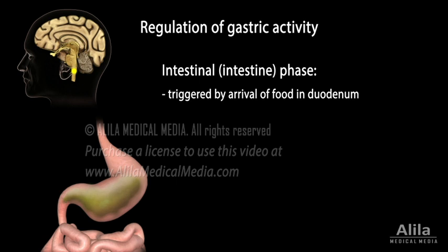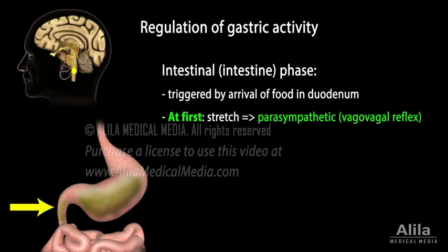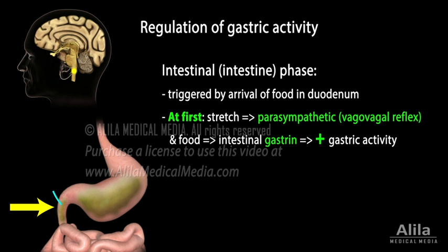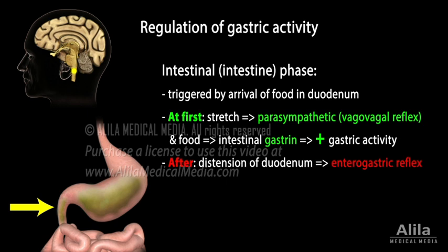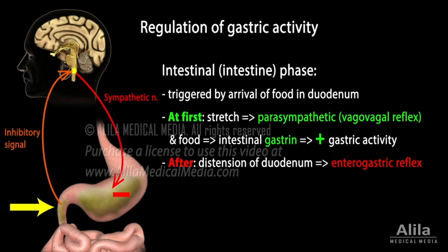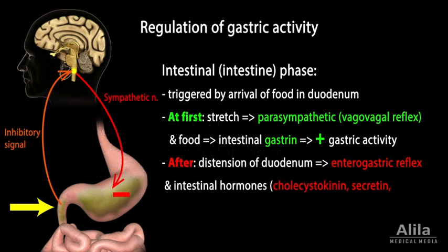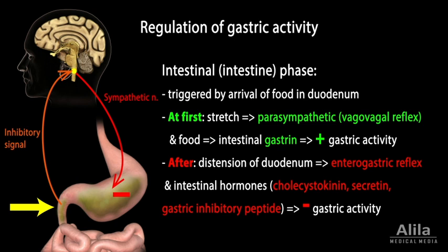The intestinal phase is triggered by the arrival of chyme in the duodenum. Initially, the stretching and presence of partially digested food in the duodenum further stimulate gastric activity via the vagal-vagal reflex and production of intestinal gastrin. Soon, however, distension of the duodenum inhibits gastric secretions and slows down stomach emptying via the enterogastric reflex and several intestinal hormones, thus allowing time for the intestine to process chyme.